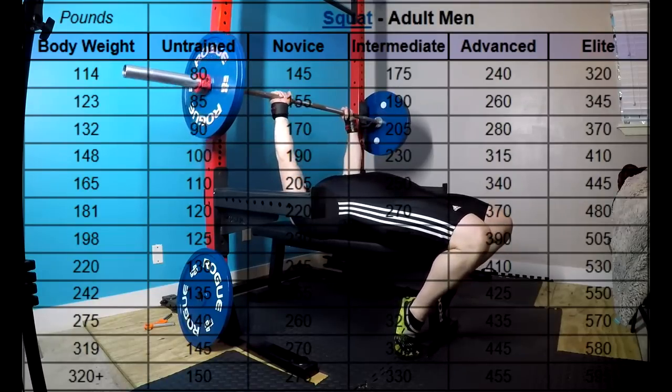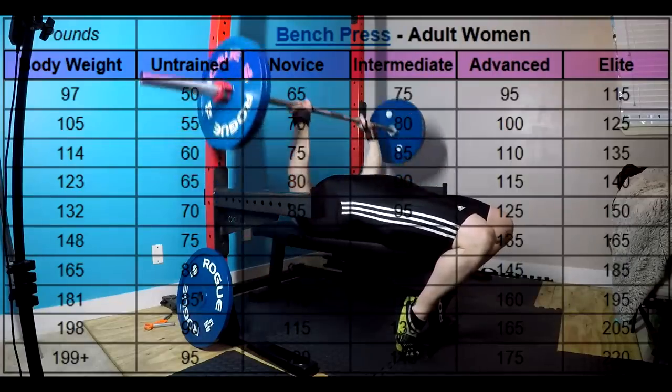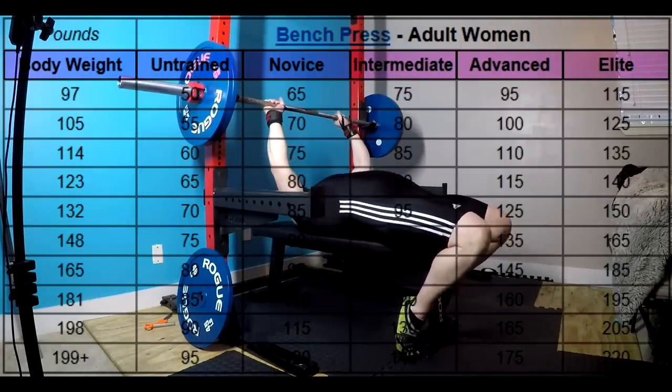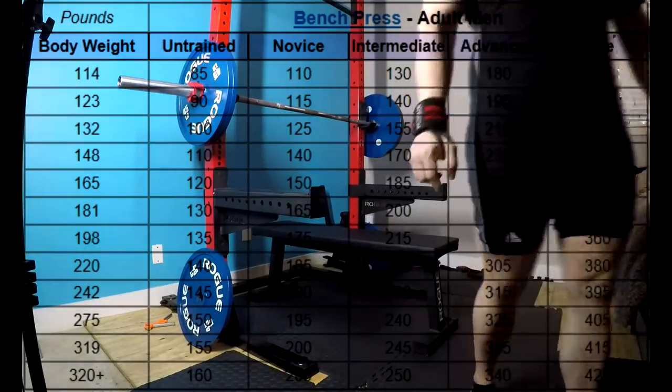And what you'll find is that the Wilks score pretty well is a decent representation of relative strength. But if you come in, and a lot of times you'll see guys who do this, they'll be like, oh yeah, my pound for pound strength is good. And they're in a lighter weight class.